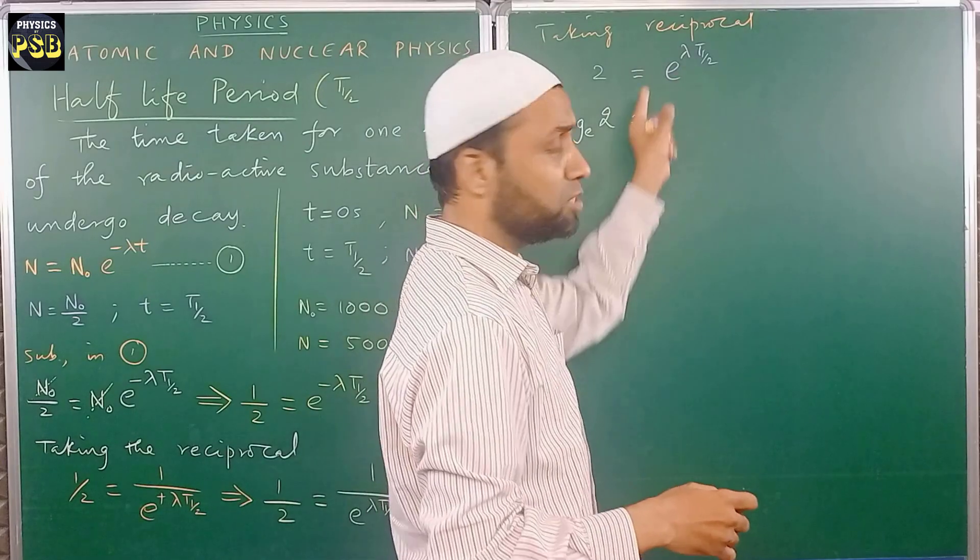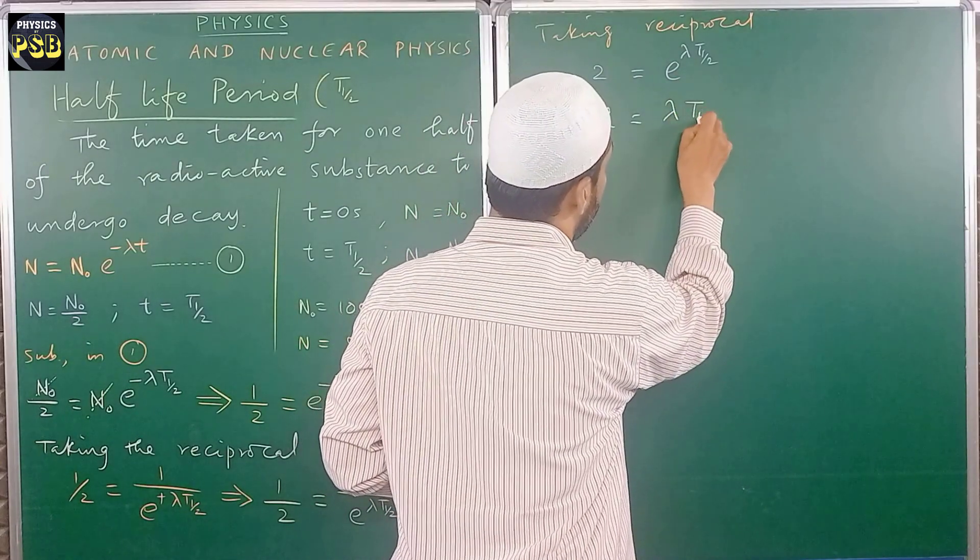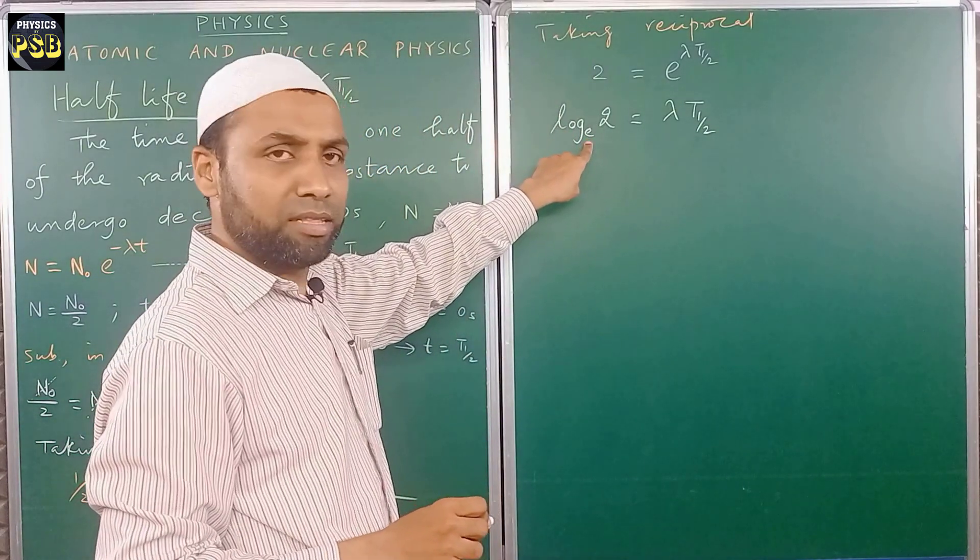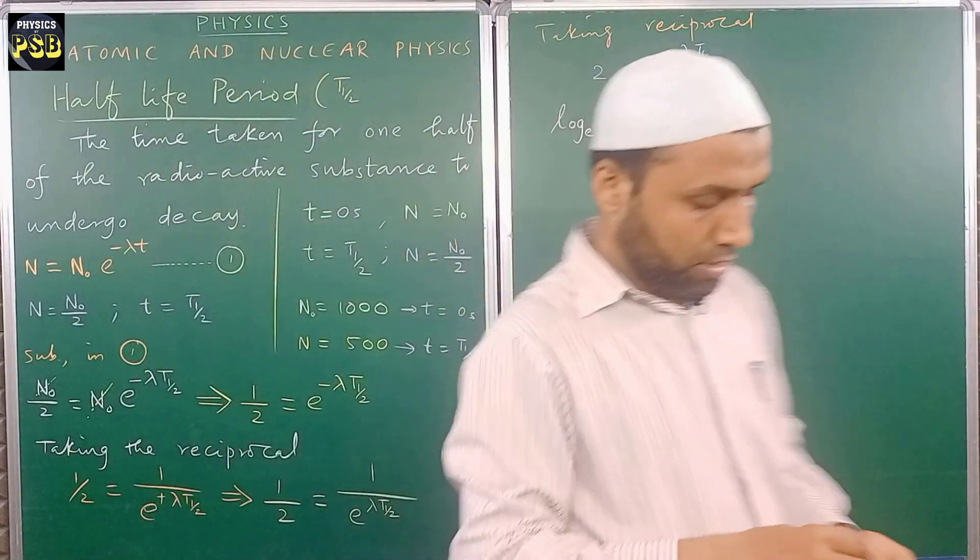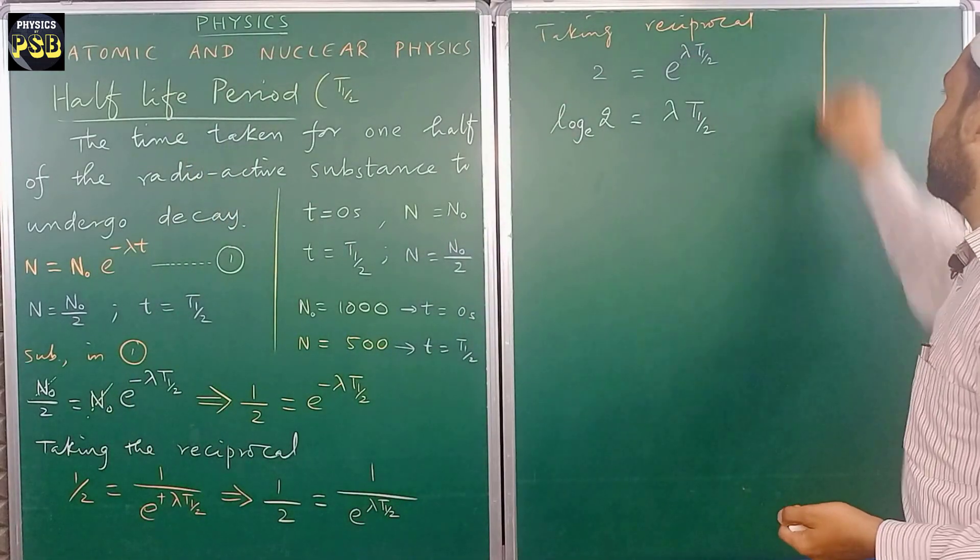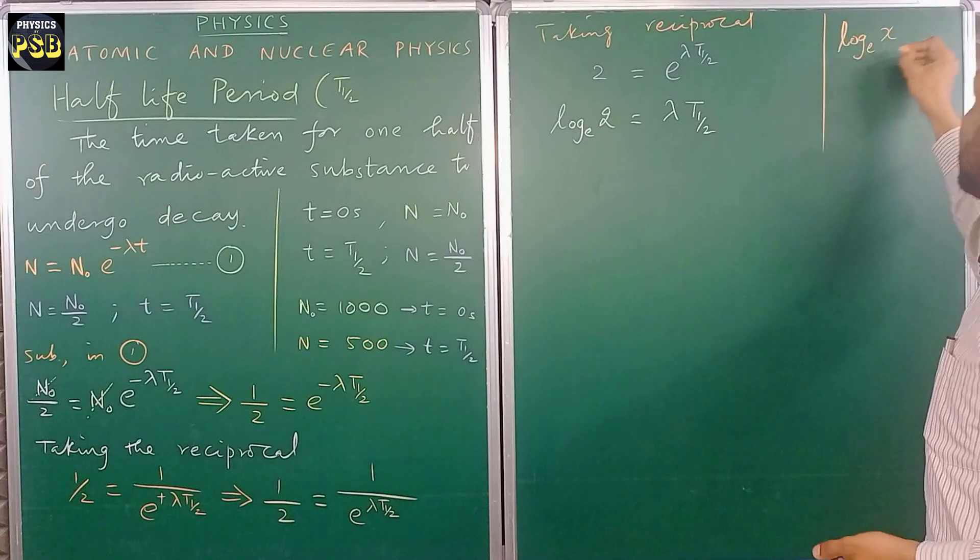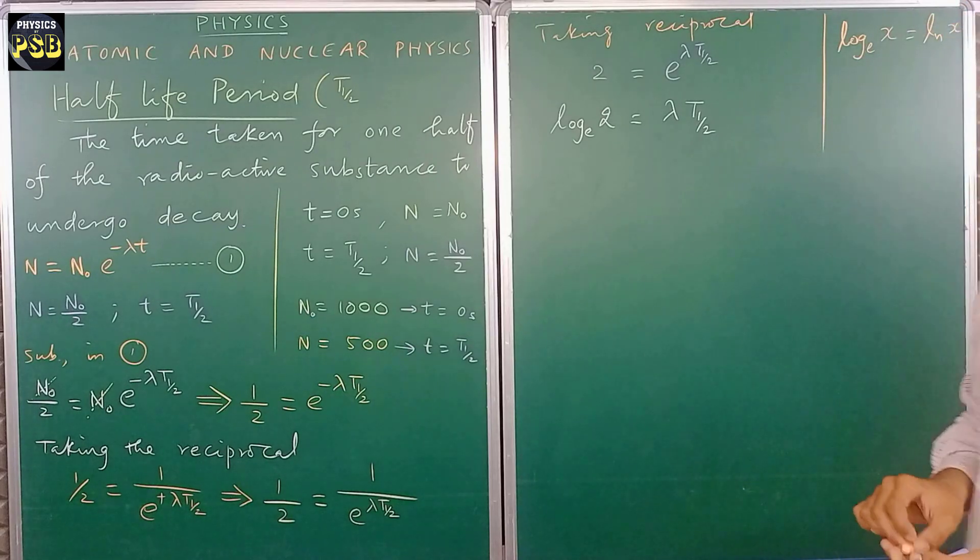If I take natural log of 2, natural log of 2, then the exponential term will disappear. I will have only lambda t half here. If we have e as the base, then it stands for natural log. Now in some cases, log of x to the base e can be written as ln of x. This is called as natural log.